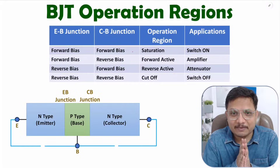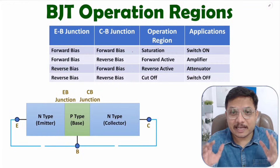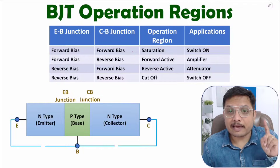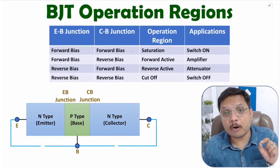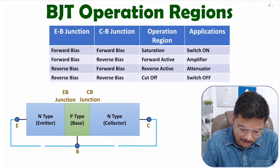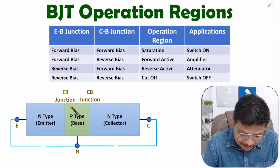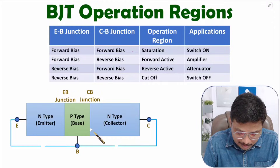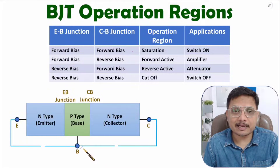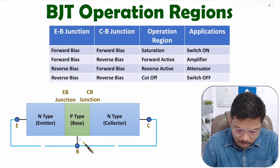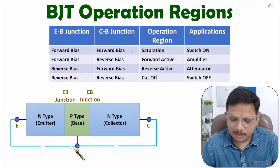Hello friends, welcome to Engineering Funda Family. In this video I'll be explaining BJT operational regions, discussing four different operational regions of BJT. For that I'll be using an NPN transistor in common base configuration. Here you can observe the emitter, base, and collector. The base is common between input and output, that's why this NPN transistor is in common base configuration.